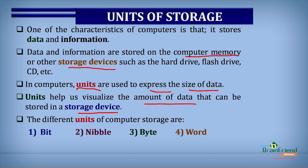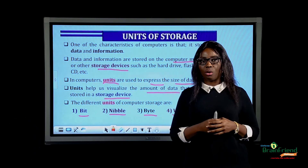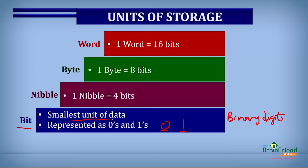There are four different units of storage in computers: the bit, the nibble, the byte, and word. The first is the bit, which stands for binary digit. Remember, the computer works with zeros and ones — it understands zeros and ones — and each of these digits is a bit. So the bit is considered the smallest unit of data.